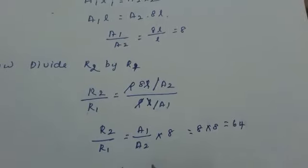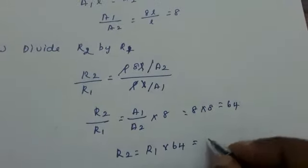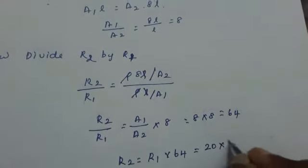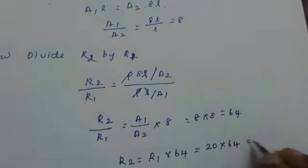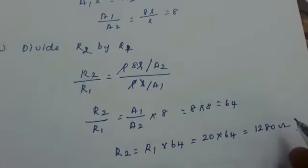So R2 is equal to R1 into 64. What is your R1 according to the problem? R1 is 20 Ohm. So 20 into 64. So how much you will get? 1280 Ohm.